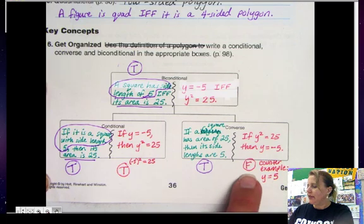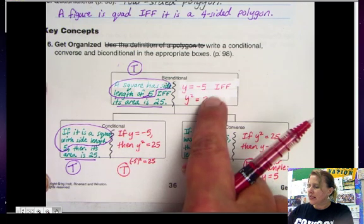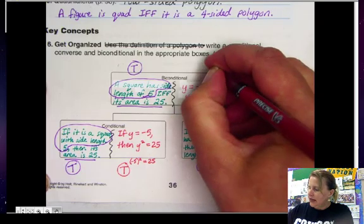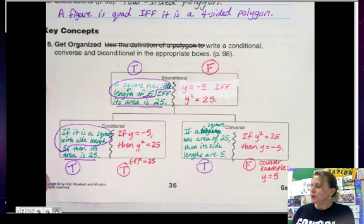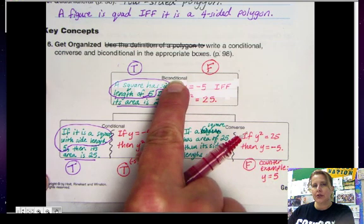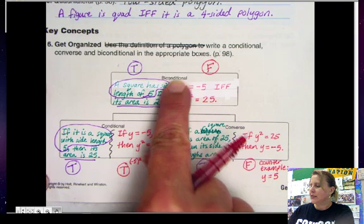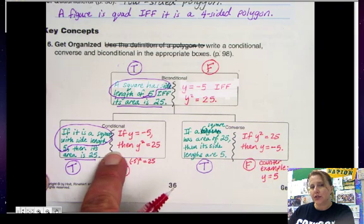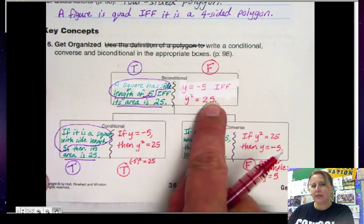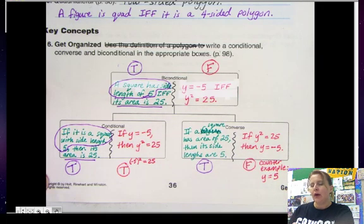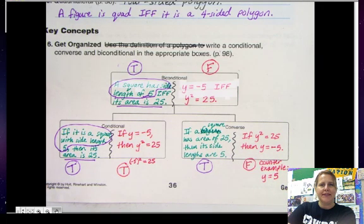My counterexample would be y could instead equal positive 5. So because one of these is false, this biconditional is false. It is not true. So you're going to have to learn how to decide if a biconditional is true, and the only way to do that is by looking at both the conditional statement and the converse statement that comes out of the biconditional. Okay, that concludes our lesson for today. Thank you.